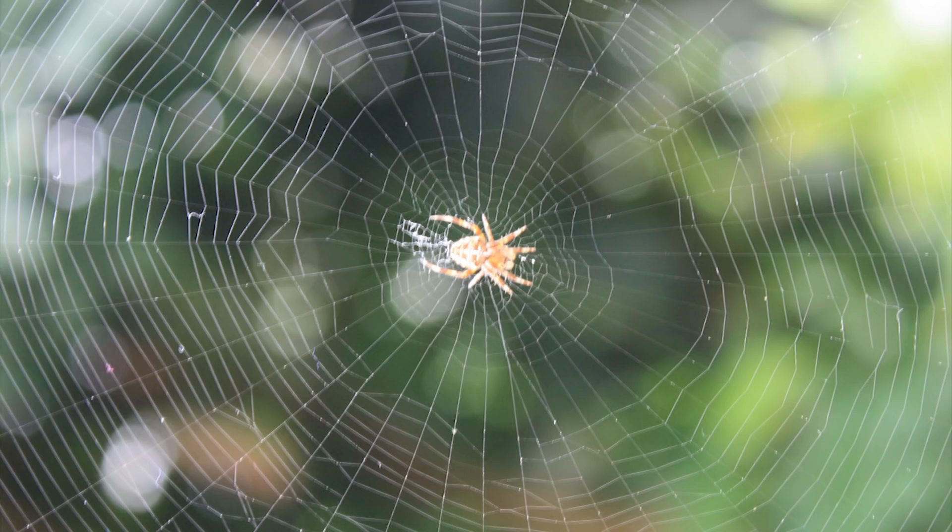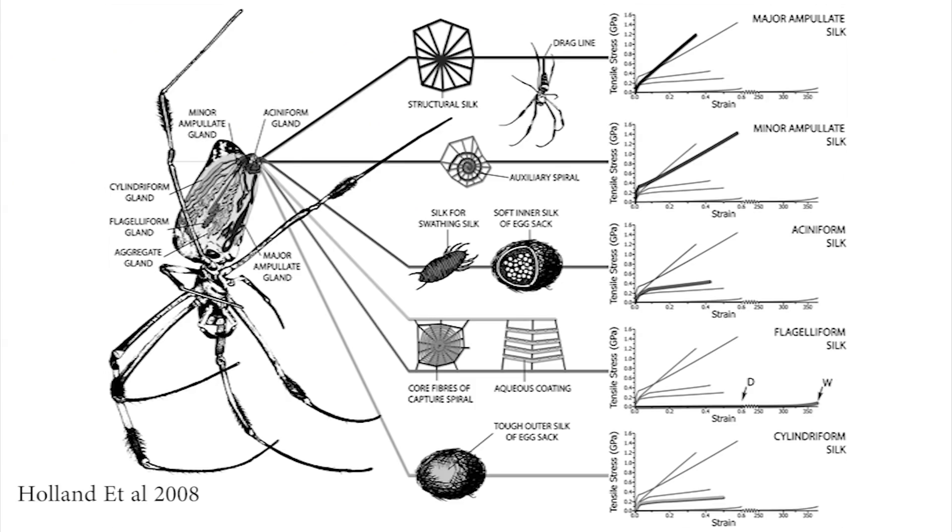Spider silk is amazing and has lots of properties that make it interesting, but it isn't actually just one material. Every species of spider actually produces many different types of silk that they'll mix and match to make fibers with the properties it wants. Some silks are very strong and stiff, while others are stretchy or sticky. As we all know, it uses these silks to spin webs, which act both as its home, but also as a net for catching prey.